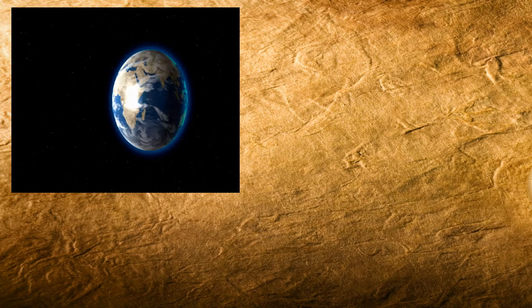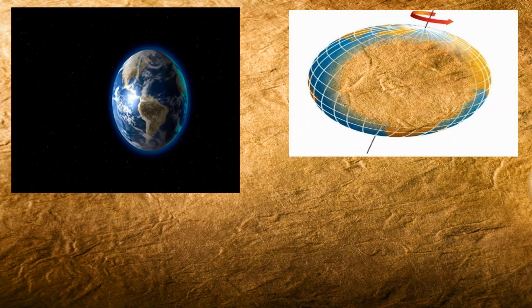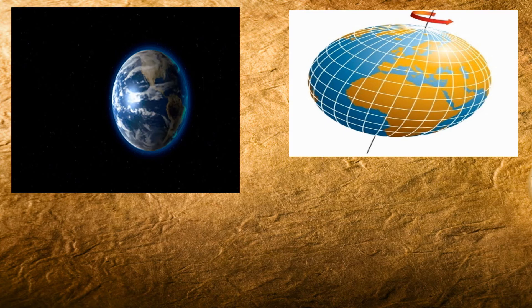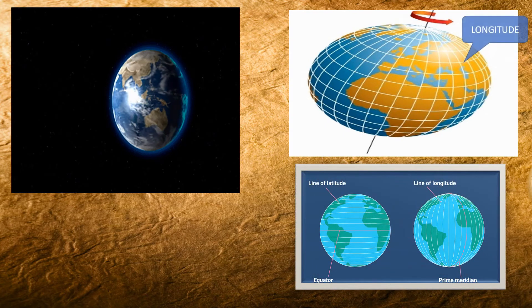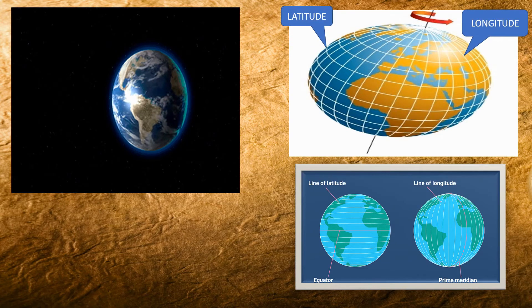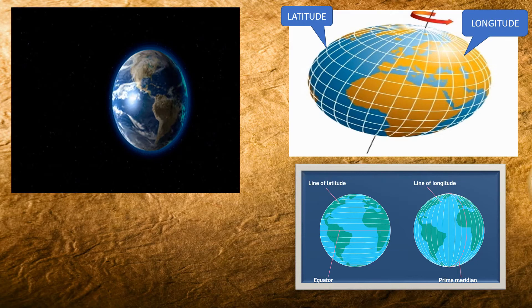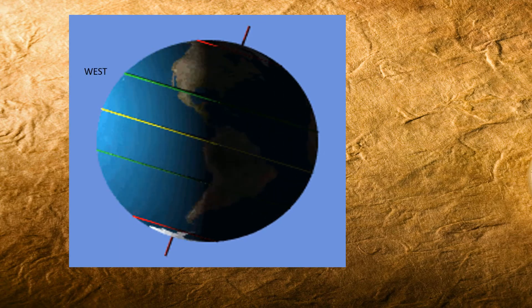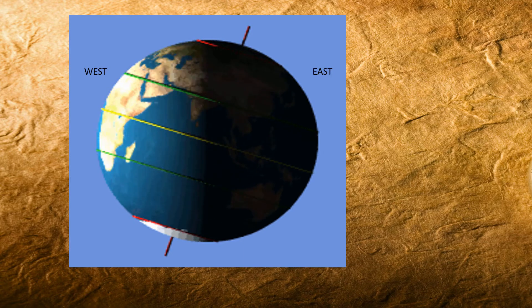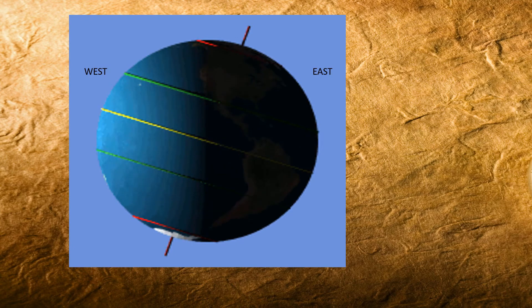Our earth is spherical in shape. Considering the shape of the earth, man defined a graticule on the earth. Graticules are the network of lines of latitude and longitude. He coordinated between the time of earth's rotation and the meridians of the graticule. Earth takes 24 hours to make a rotation of 360 degrees around itself. Earth rotates from west to east, so the eastern part of the earth is ahead of the western part in terms of time.